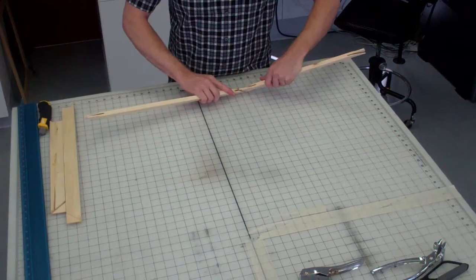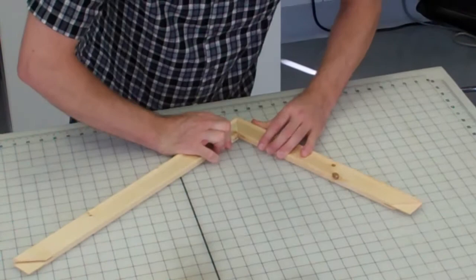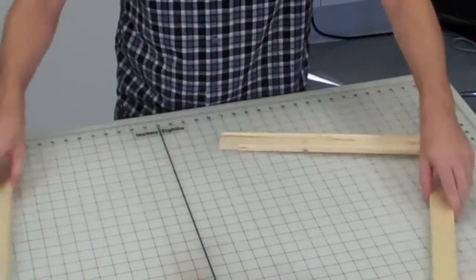Assemble your stretcher bars. If there are ridges on both sides, it doesn't matter which side you use. If there is a ridge on one side only, that's the side you'll want to put against the back of your print.